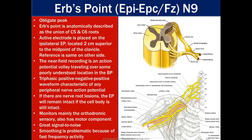ERBs point is an obligate peak, anatomically described as the union of C5 and C6 roots in the brachial plexus. Electrode placement should be in the rostral area to the clavicle at mid-clavicle to pick up the response. Remember, this is a traveling response — if you place the electrode distal or caudal to the clavicle, you can still pick up a response in someone without heavy pectoral muscles, though it may be slightly earlier in latency.